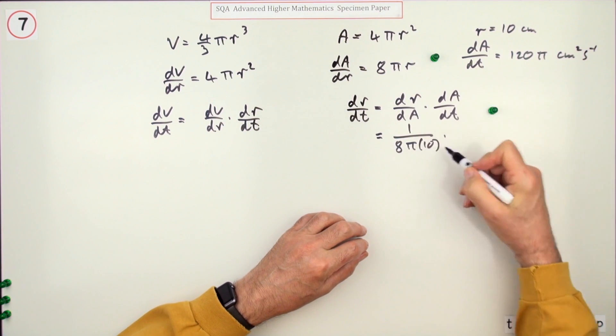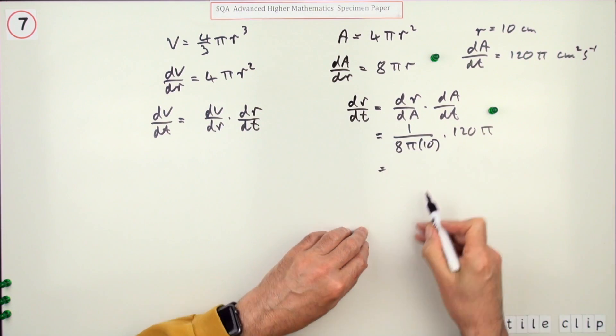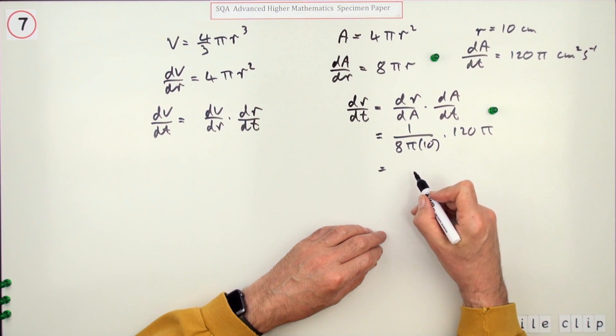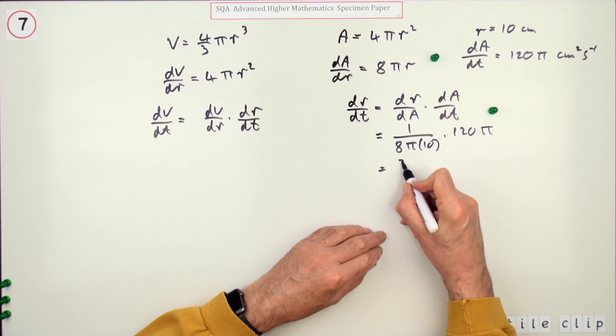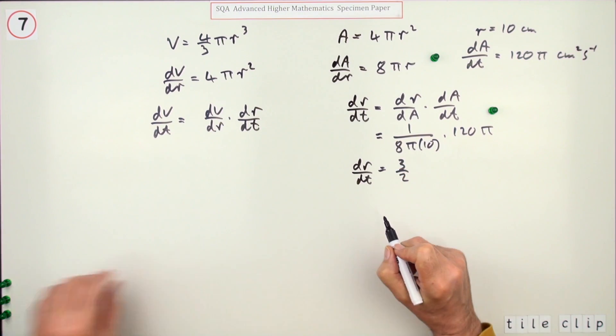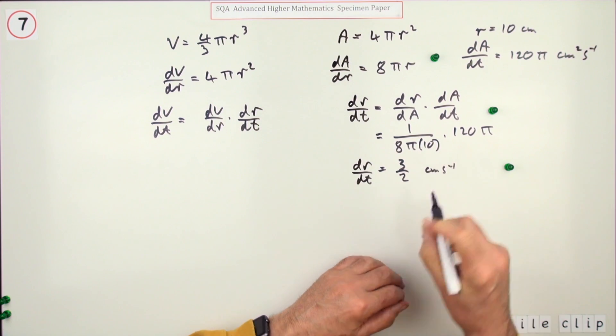So dr/dt = 3/2 - that's worth a mark. You can also put the units: 3/2 centimeters per second.